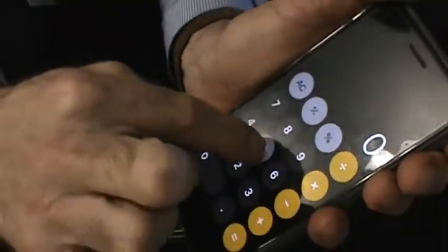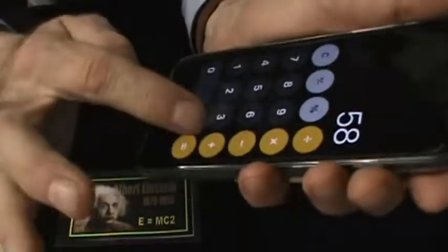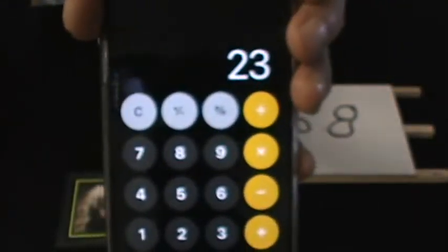Now, you take the original number you thought of, in this case, 58, and subtract that number, 35. And hit equals.